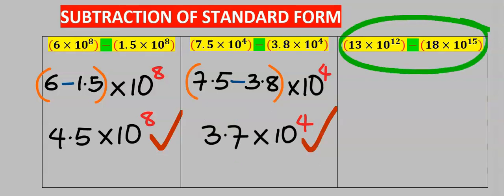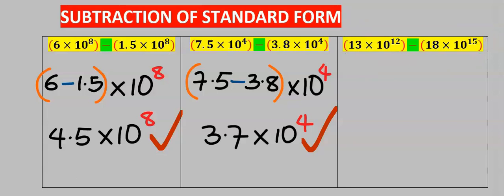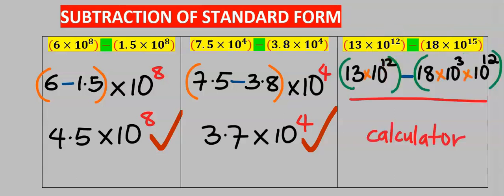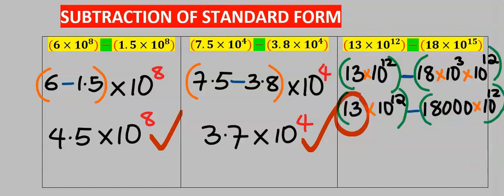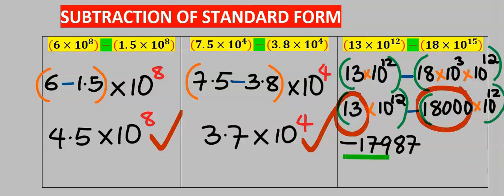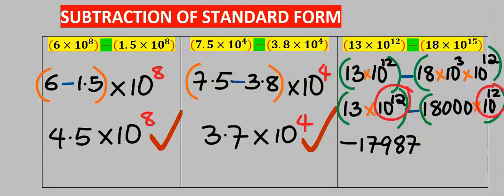Next, consider this question where the powers are not the same. The first step is to make them equal. If you input this directly into your calculator, it is converted internally without you even knowing it. Next, 13 subtract 18,000 gives minus 17,987. Next, 10 to the power of 12 are the same.